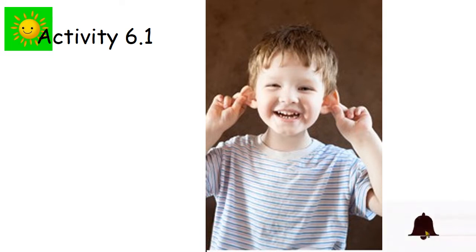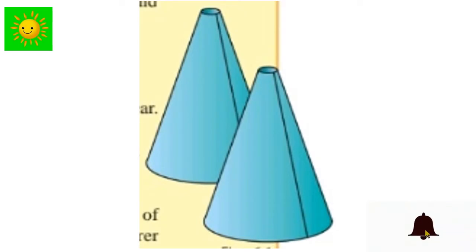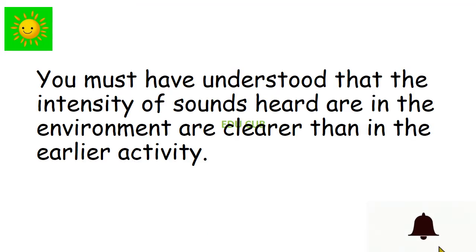You may have heard many sounds in the environment. For a better understanding, we can do this activity. We need Bristol boards, pair of scissors and glue. Make two equipment using the Bristol boards as given in this figure. Keep them on your ear and listen to what you hear. Compare the intensity of sounds that you heard during this activity. You must have understood that the intensity of sounds heard in the environment are clearer than in the earlier activity.